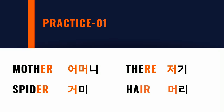Let's do some practice. 'Mother' — put the tongue down: er → ㅓ → ㅓ → 어머니. 'Their' — er, put the tongue down: er → ㅓ → 칠기. 'Spider' — er → ㅓ → 거미. 'Hair' — er, put the tongue down: er → ㅓ → 머리.